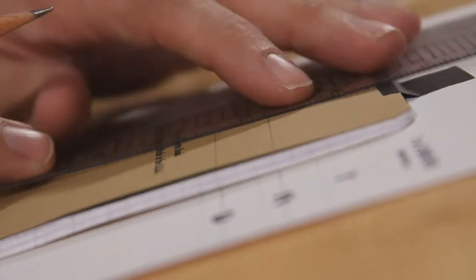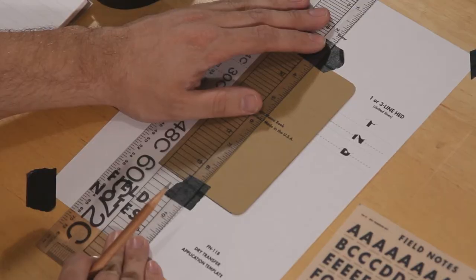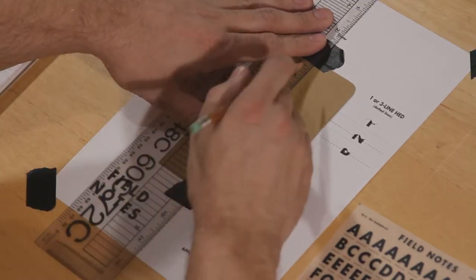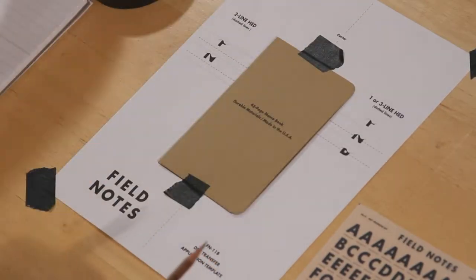I'm also going to draw the center line. The trick with doing this, especially if you're centering type, is you always want to start in the center of the layout and work out to the sides because if you start on one side, you're going to crash. You're never going to get it centered right.